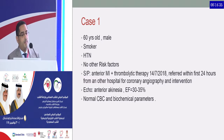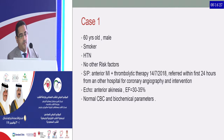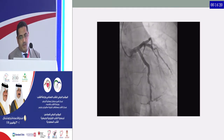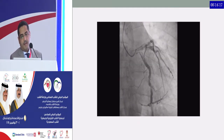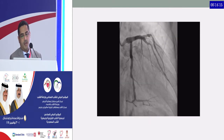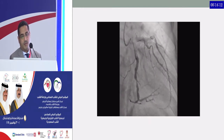The first case is a 60-year-old male patient, smoker, hypertensive. He had an anterior MI, was thrombolized, and referred to our hospital for angiography and intervention. He showed anterior akinesia, ejection fraction 30 to 35 percent. The angiogram showed a proximal ectatic vessel with significant stenosis.